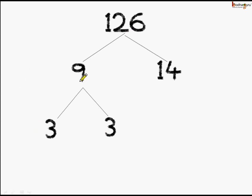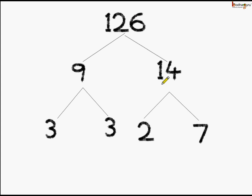It is the same thing as 9 multiplied by 14 gives us 126. Now, coming to another branch of 126 which is 14. 14 again is not a prime number, and we can factorize it further. So, let's make two branches — we know 2 sevens are 14. Here we wrote 2 and in another branch we wrote 7.